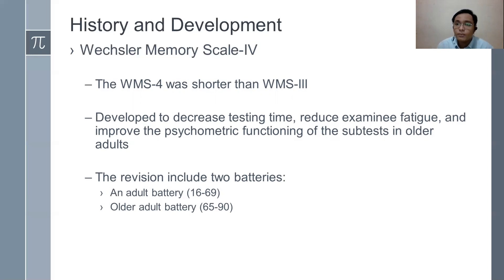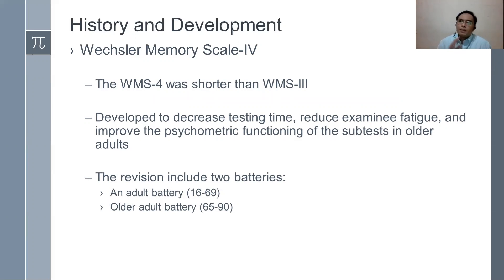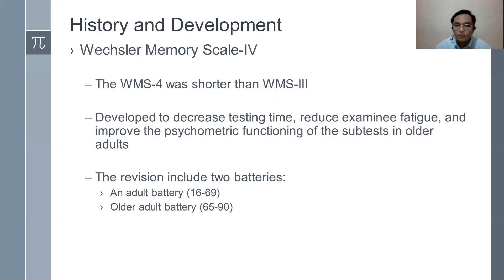Next is Weschler Memory Scale 4. WMS 4 was shorter than WMS 3. It was developed to decrease testing time, reduce examinee fatigue — since earlier memory scales were so long that examinees experienced fatigue and boredom — and it has improved psychometric functioning of subtests in older adults. Previous memory scales had problems with scoring and norms for their populations, but WMS 4 addressed all of those. It introduced two batteries: the adult battery (ages 16–69) and the older adult battery (ages 65–90), expanding the age range.